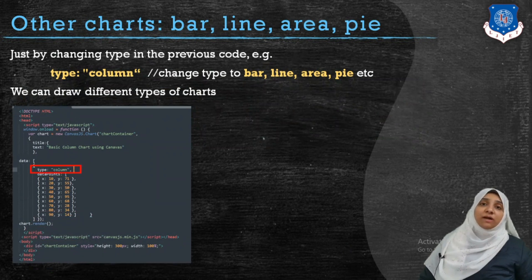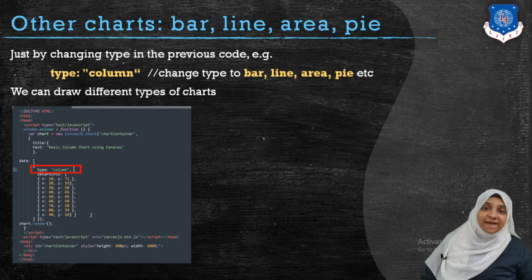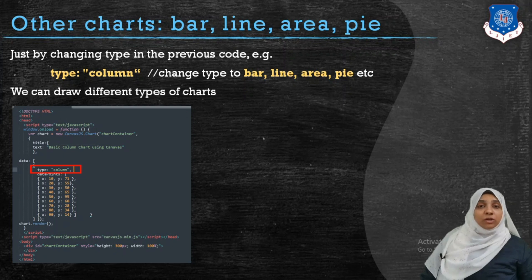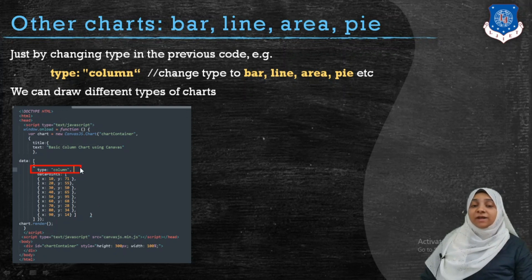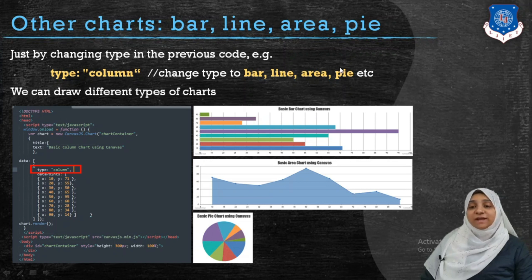Now, what if we would like to have more than one type of chart? For example, I want the same data to be displayed as a bar chart, or a line chart, or an area chart, or a pie chart. There is only one line you need to change — the line that says type: column. You can change it to bar, and it will display a bar chart figure. If you change the value to line, you will get a line chart. If you change this value to pie, it will give you a pie chart, and so on.